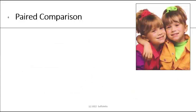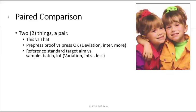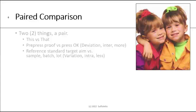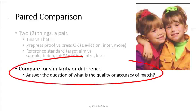Let's define a paired comparison. This photograph you might remember from the 1987 to 1995 TV comedy show Full House — that's Mary-Kate and Ashley Olsen, the twins. So if I have two things it's a pair, and I often call them 'a this and a that.' The 'this' could be a pre-press proof and the 'that' could be a press okay. When you compare the pre-press proof to the press okay, we call that deviation — an intercomparison between two things — and that typically will have more variation. The other comparison can be the reference standard, the target aim, versus the sample or batch — this would be called variation, and it's intra, within variation, typically less.